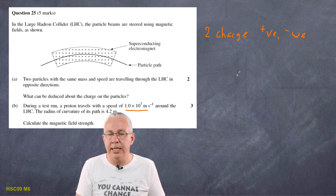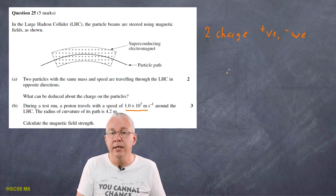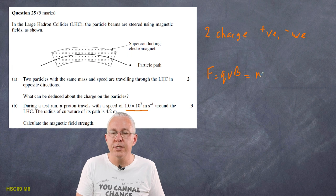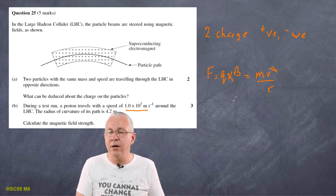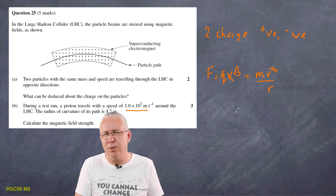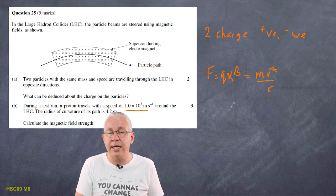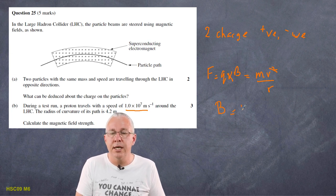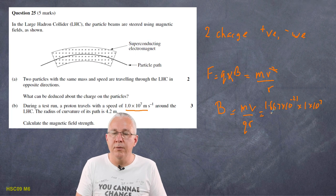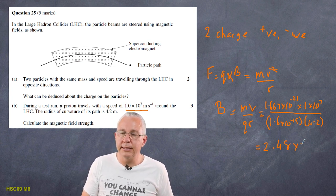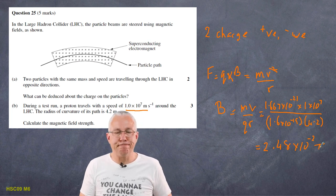For part two: a proton moves in a circle in the LHC. The Lorentz force equals the centripetal force: qvB = mv²/r. Cancelling one v gives qB = mv/r, so B = mv/(qr). Substituting the proton's mass, the given velocity, the proton charge, and the given radius of curvature, and calculating gives B = 2.48×10⁻² T.